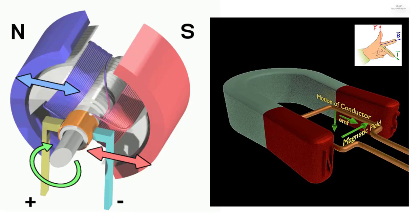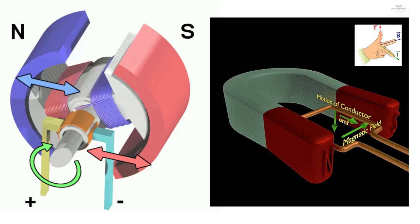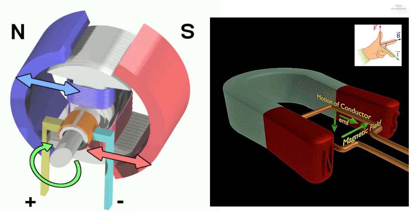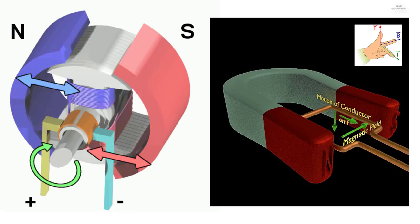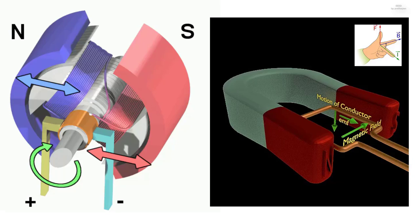The thumb is the force F. The first finger is the magnetic flux density B. The second finger is the electric current I.